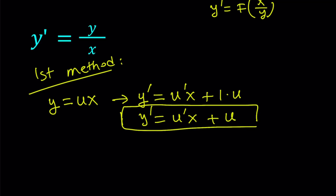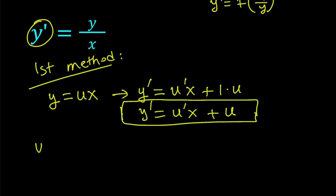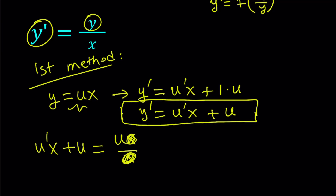Let's substitute this into our equation. On the left-hand side we have y prime, which I replace with u prime x plus u. On the right-hand side I have y over x, and since y equals ux, replacing y with ux and dividing by x gives u. Now, if y is zero, then y prime is zero, and y equals a constant is also a solution, but we're going to be looking for non-constant solutions.